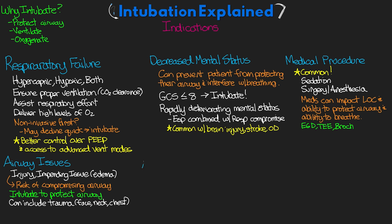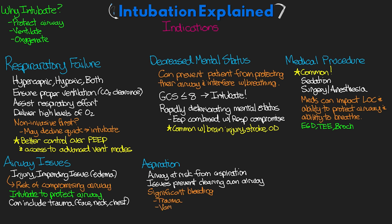Another indication is going to be for aspiration. Sometimes the patient airway will be at risk from aspiration, either from issues preventing them from clearing their own airway or in cases of significant bleeding, such as trauma, esophageal varices, epistaxis, etc. And then finally, the last major indication I'm going to talk about is going to be apnea. So if our patients just aren't breathing, then we need to intervene and take over that for them. This could be the result of something like a drug overdose or a brain injury.